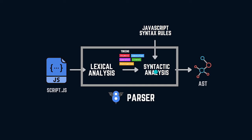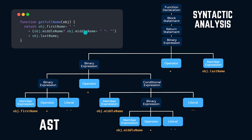These tokens are the input to the next stage: syntactic analysis. During syntactic analysis, we check whether the written program is correct using JavaScript syntax rules. To do that, the whole program is represented in a data structure called an abstract syntax tree, often abbreviated as AST. Let's check how this tree is created from the function declaration and how it helps the parser verify the program.